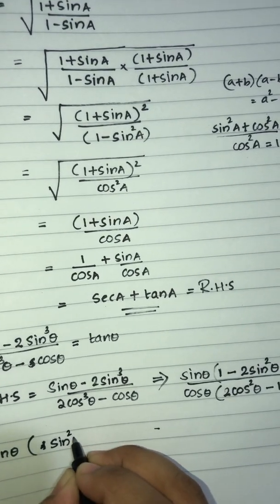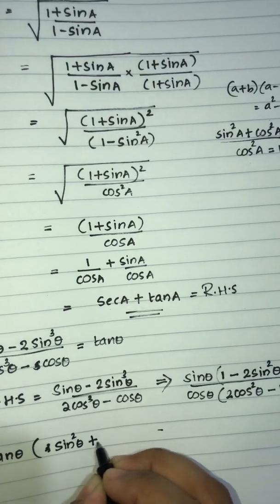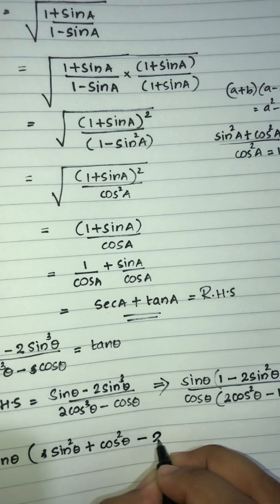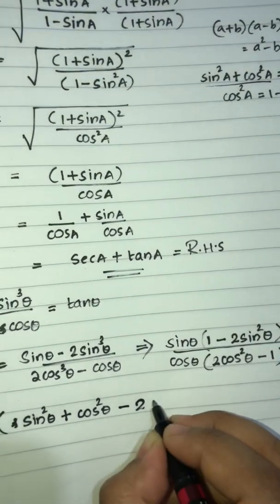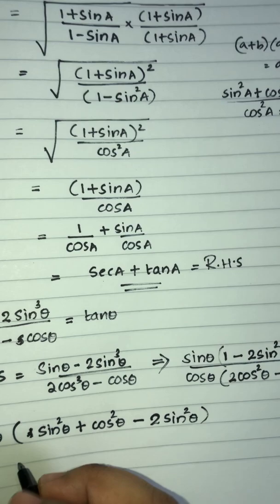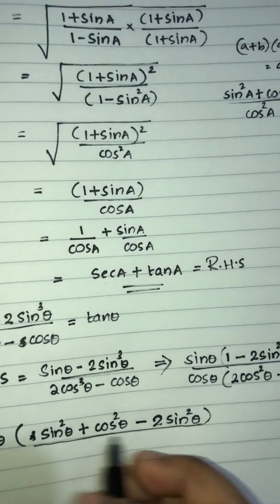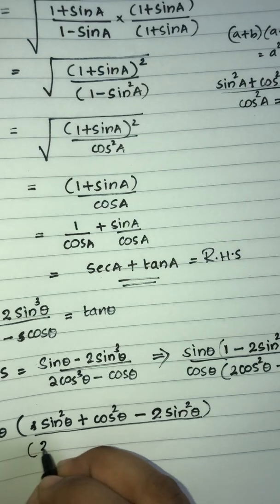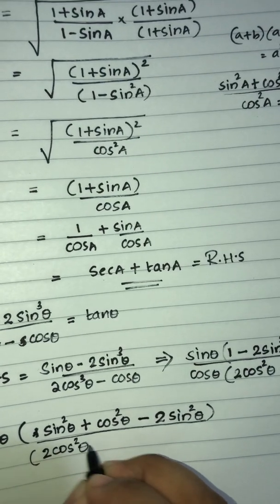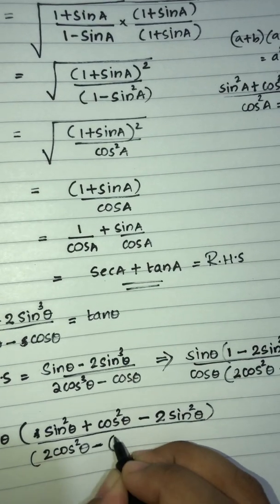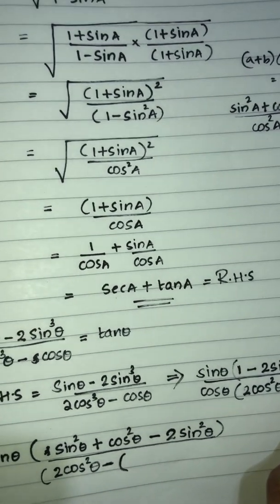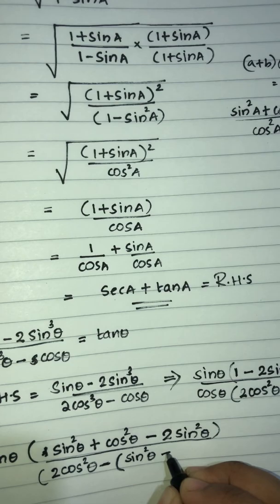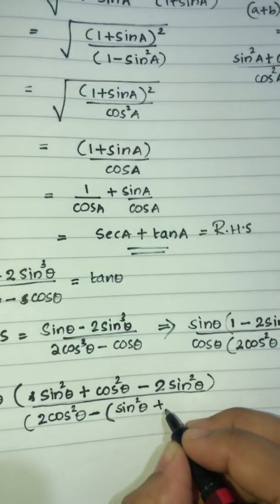In the numerator we get sin squared theta plus cos squared theta minus 2 sin squared theta. In the denominator we apply 2 cos squared theta using sin squared theta plus cos squared theta.